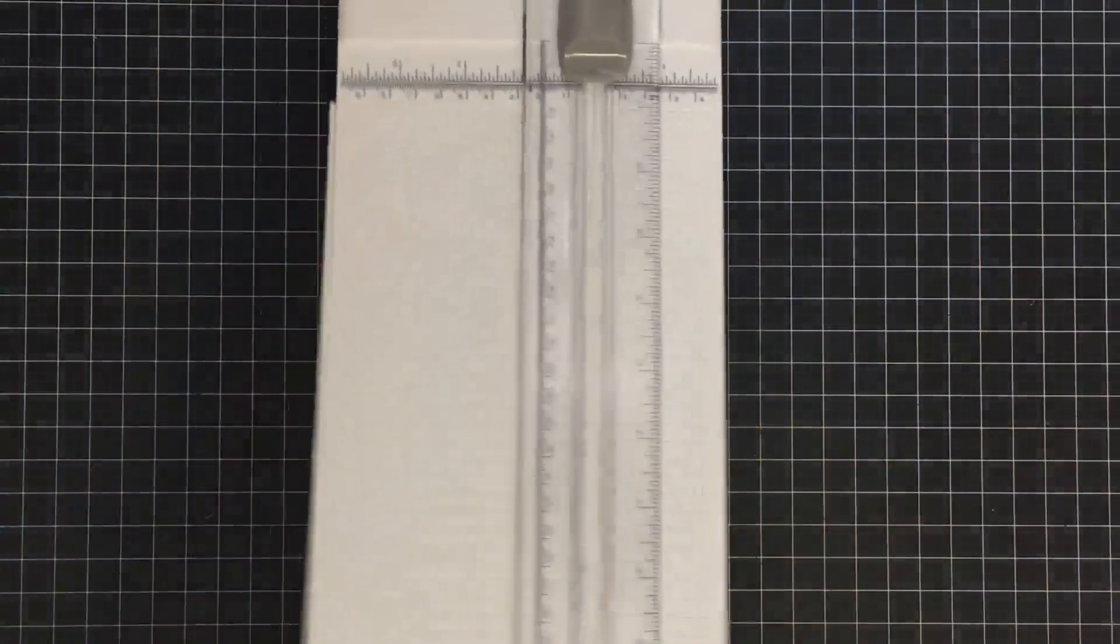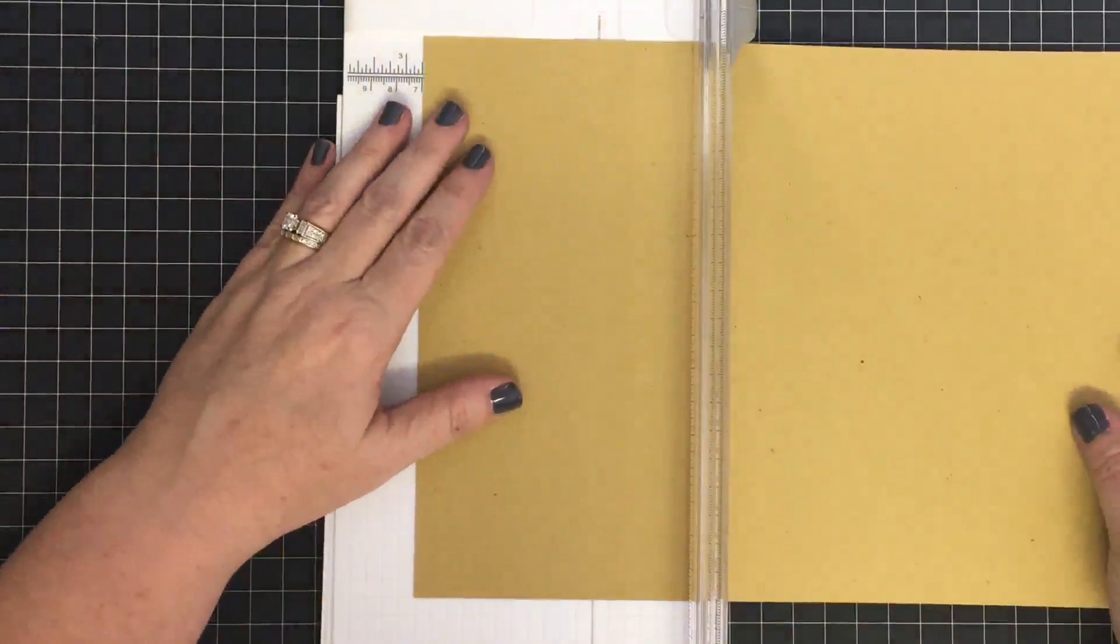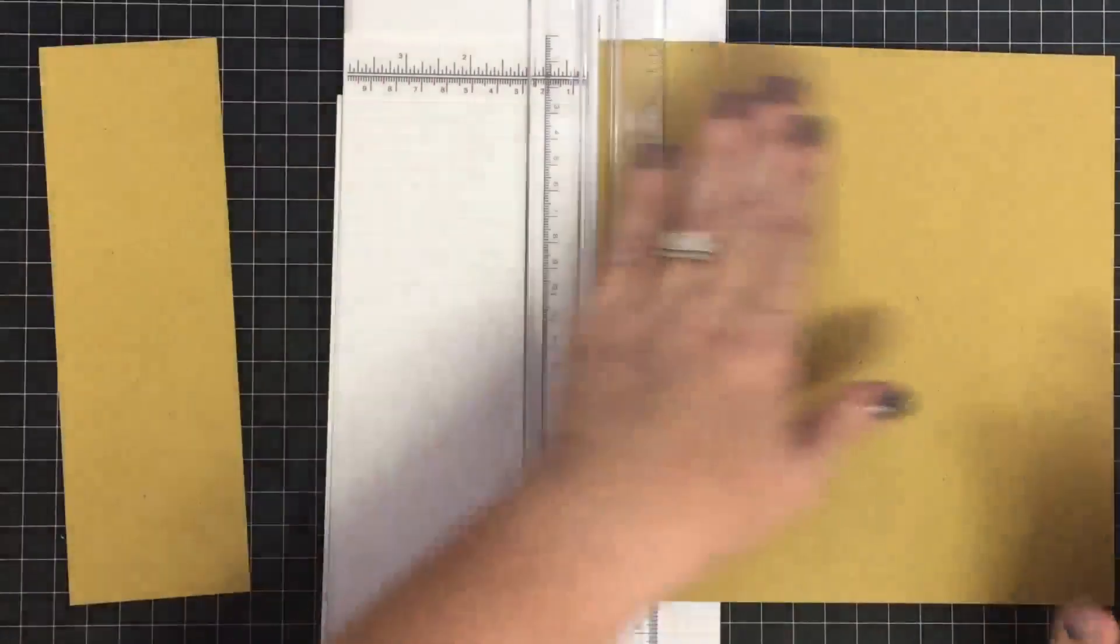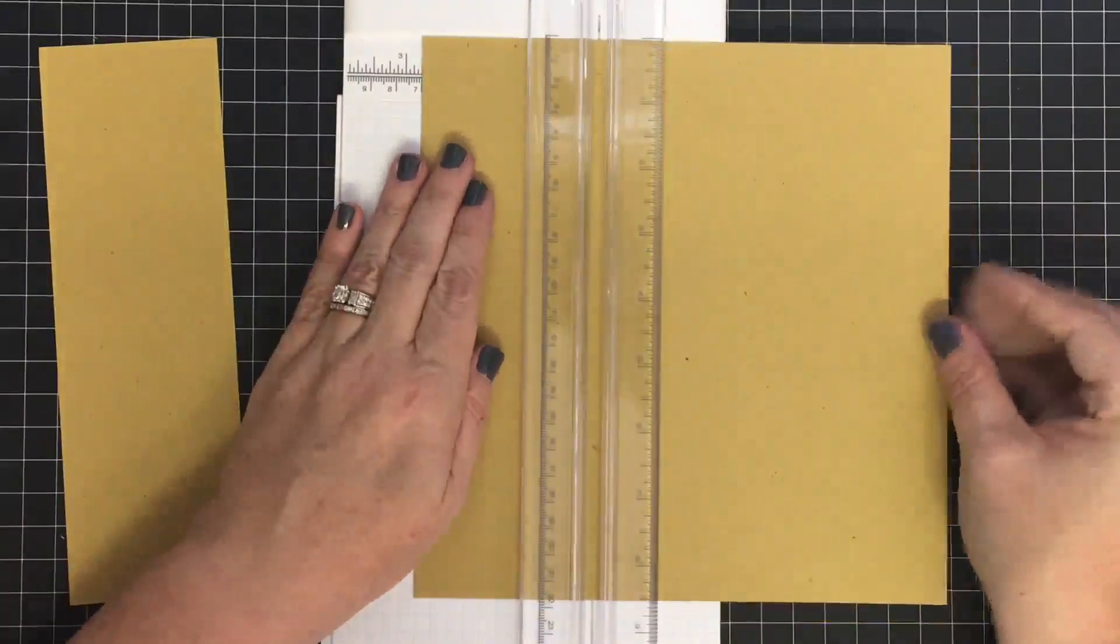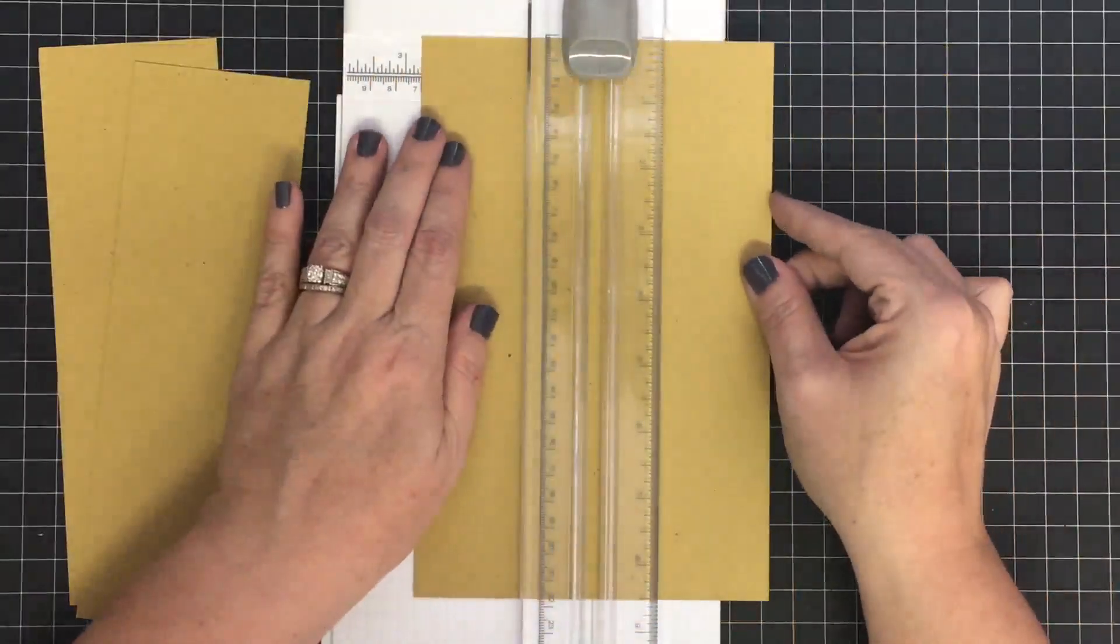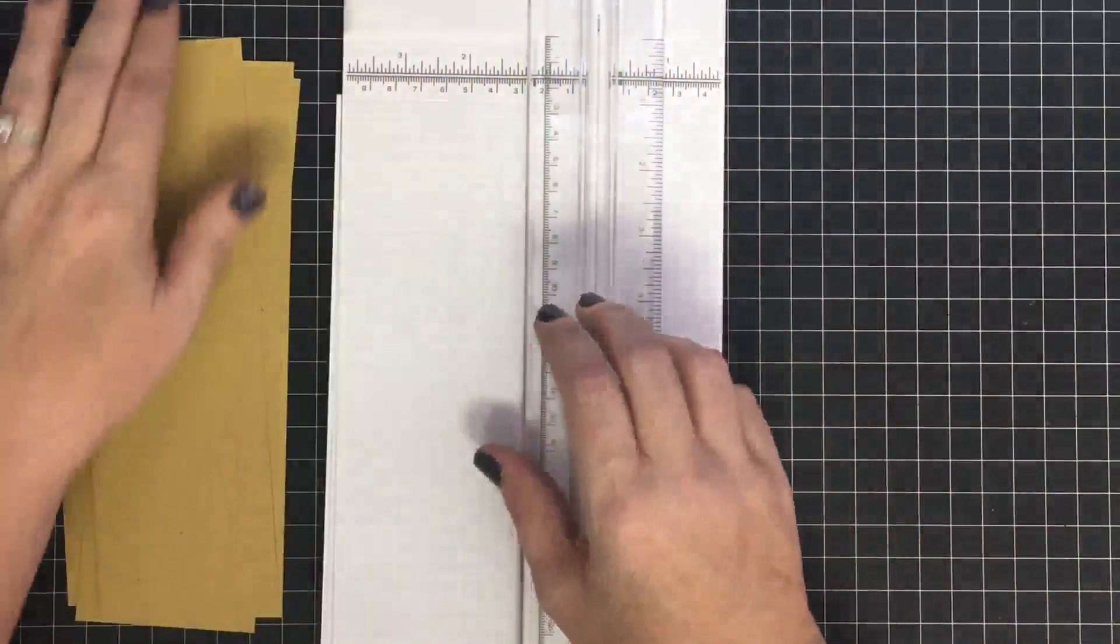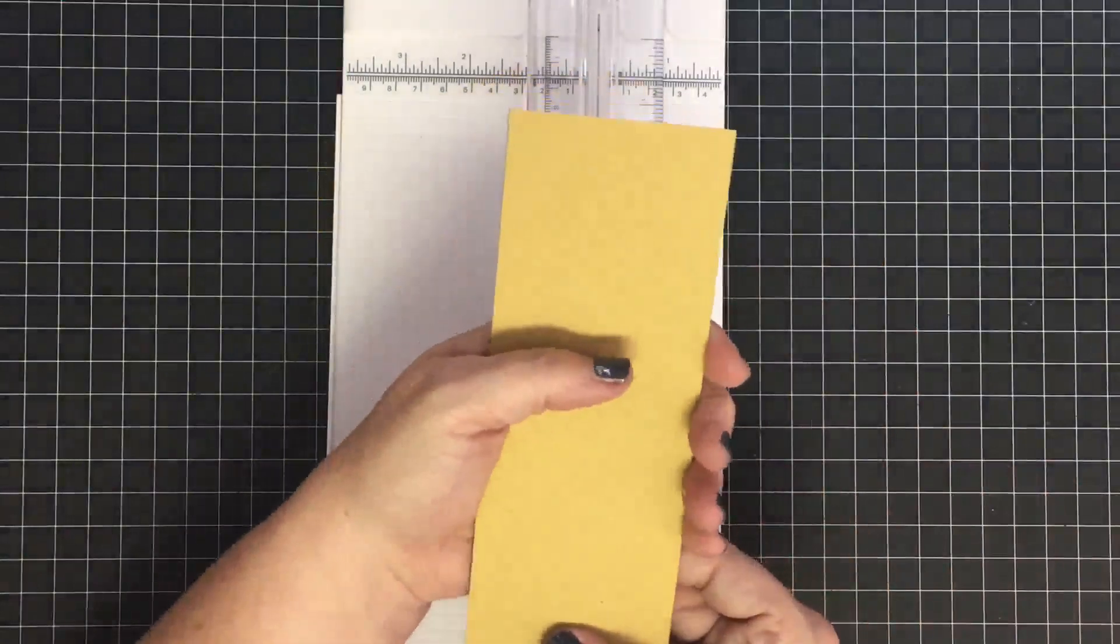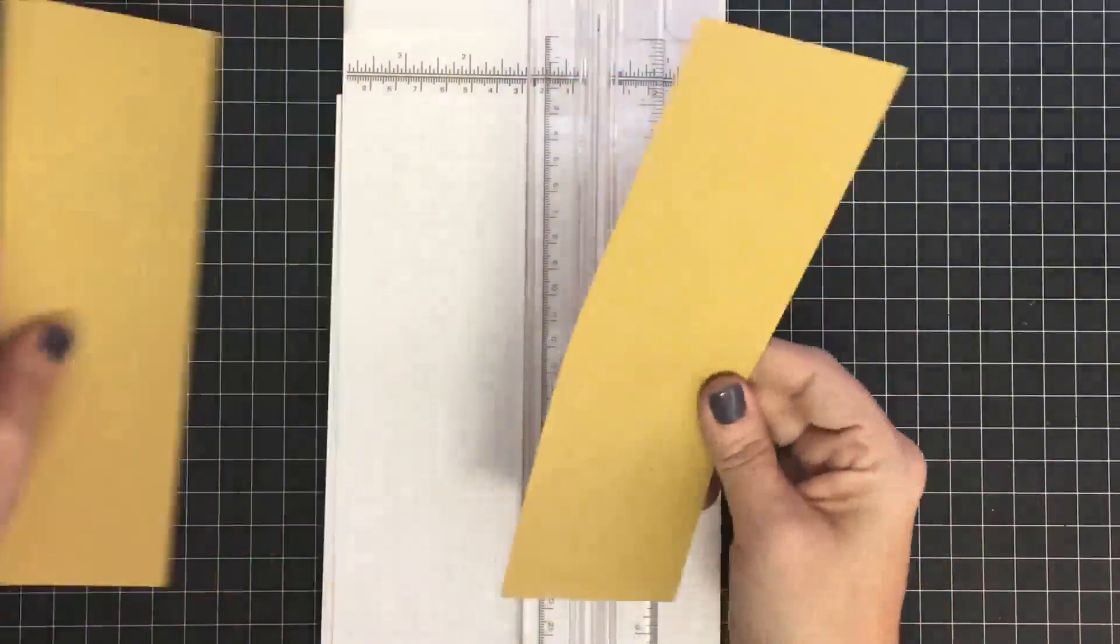We're going to take our paper trimmer and slice four slices, 2.75 inches each time. We're cutting on the 11-inch side, the long side of the paper. There's one at 2.75. Now I'm going to do this one. This is one of my favorite ways to push out a lot of tags in a short period of time. Each of these is cut at 2.75 inches and now they're all the same.